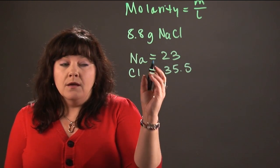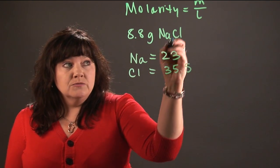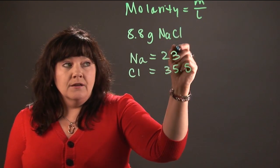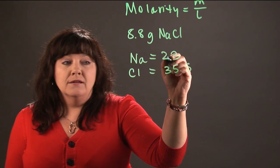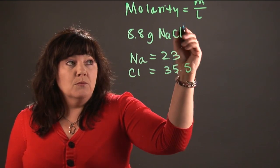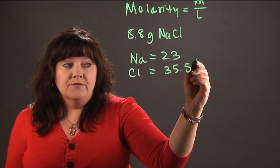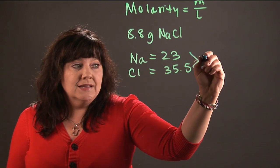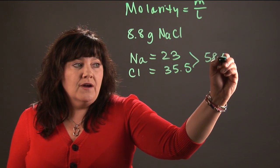So one mole of salt is going to weigh 23 grams, whereas one mole of chlorine is going to weigh 35.5 grams. So we're going to add that together and that's going to give us 58.5 grams. So now we know how much one mole of salt weighs.